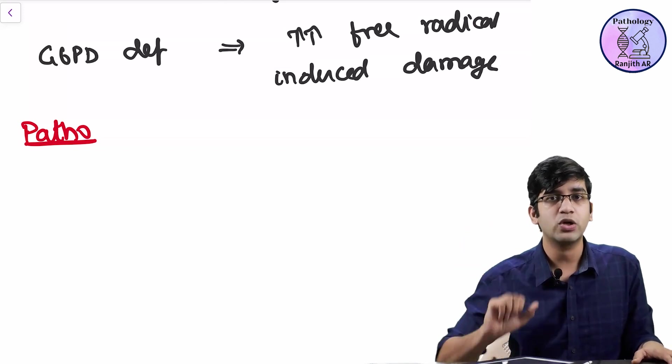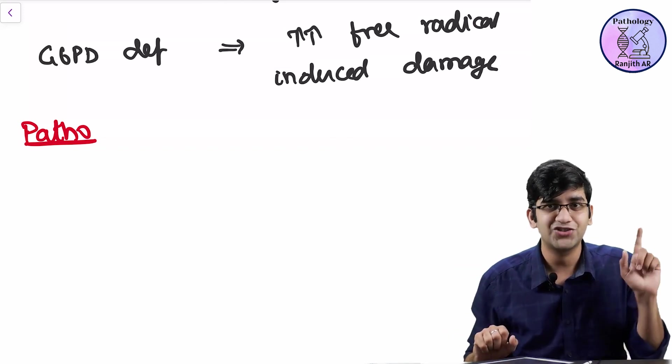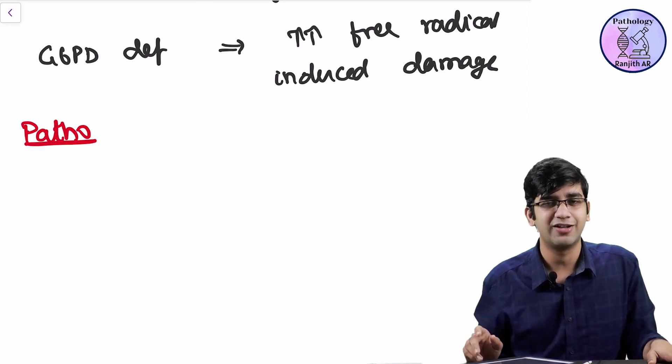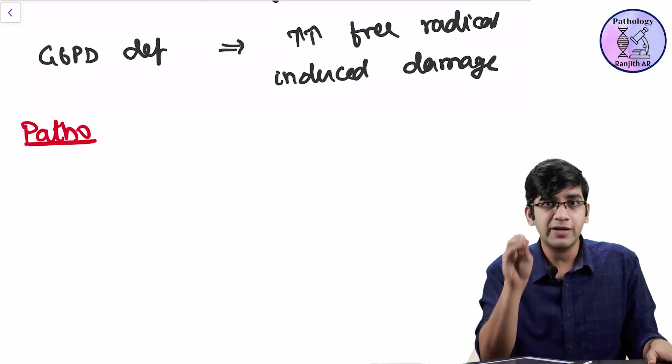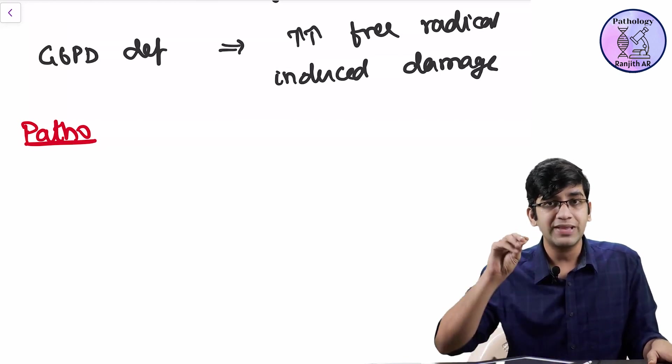When a protein is destroyed, what will happen to a protein? First chapter again. It will become precipitated. That's all. So this, in my RBC, my globin component is going to get precipitated. When they get precipitated,